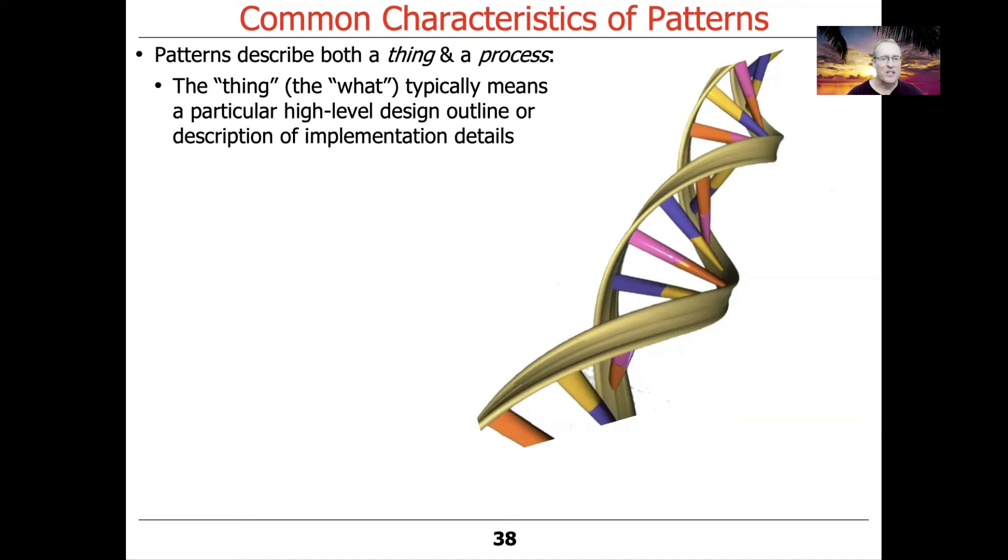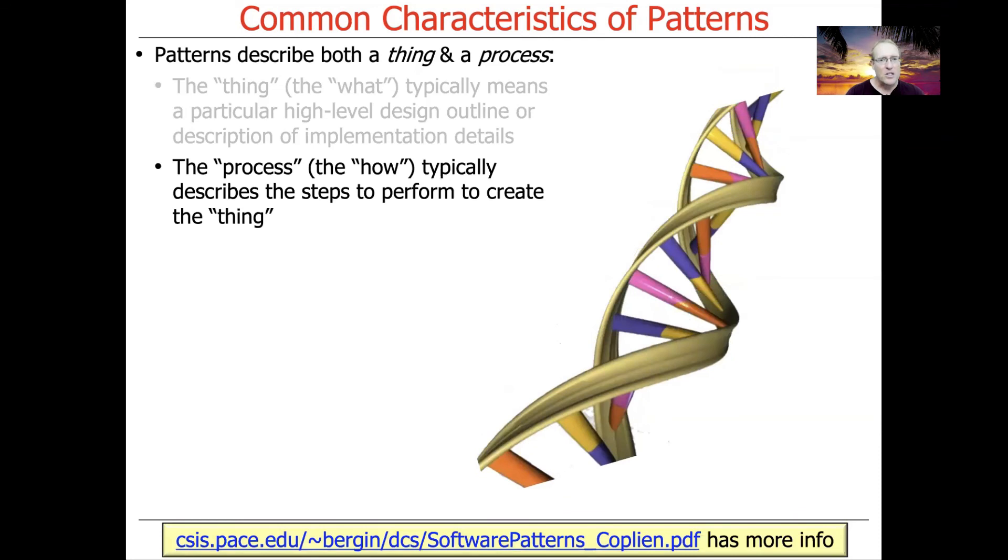We often represent that in the form of some kind of structure diagram or interaction diagram showing the structure and participants making up an exemplary use of the pattern. There's also the process, the how, that describes how we go forward to actually take the structure and then create the thing. That really has to do with the method, the pieces of what comes first. So it's both a thing and a process.